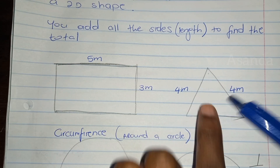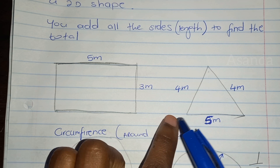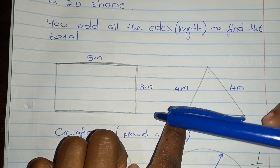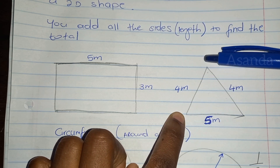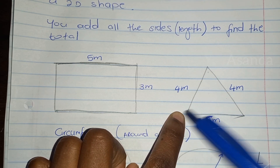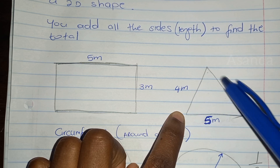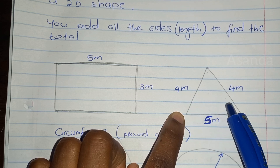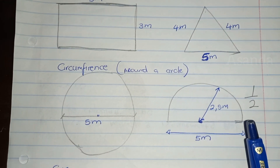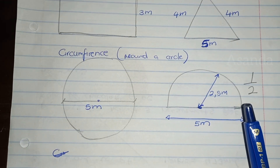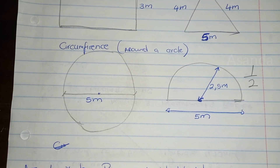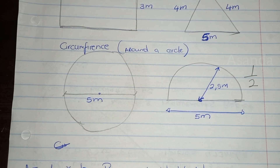And then if we look at this triangle, starting from this corner, it'll be that four plus that four plus that five, which is the total distance around the triangular shape. And then we're going to look at the circumference, which is the perimeter of a circle — it's got its own name, it's called a circumference.